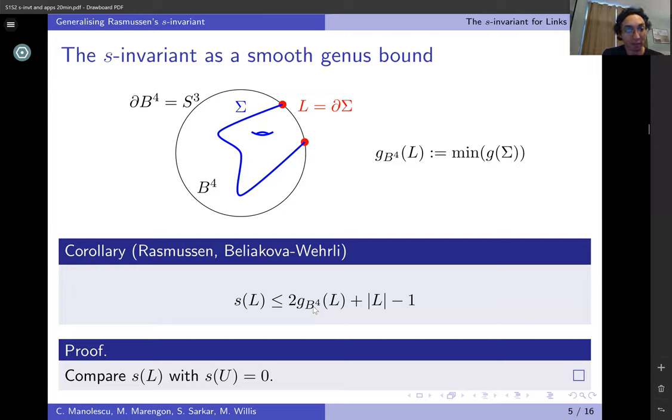That was a very important result in that previous proofs had been very geometric using gauge theory, and this was a purely combinatorial proof. All these things were defined purely combinatorially. The S invariant on its own doesn't actually tell you anything unless you can compare it to the S invariant of some other link. In this case, to get this bound what you're really doing is comparing the S invariant of your link with the S invariant of the unknot, which is zero.